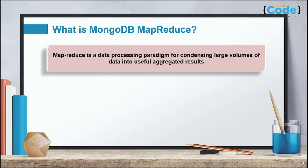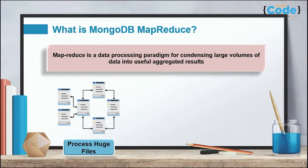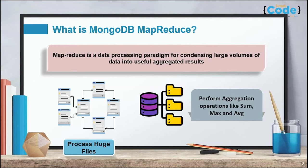Let us understand what MongoDB MapReduce is. The MapReduce function is widely used to condense large data sets into a handful of aggregated results, and the MapReduce command is used to execute this function. The data is independently mapped and reduced in different spaces before being combined and saved to a specified new collection. This MapReduce function was designed to work with large data sets. You can perform aggregation operations like max, sum, and average using MapReduce, similar to GROUP BY in SQL, working independently and in parallel with data aggregation.